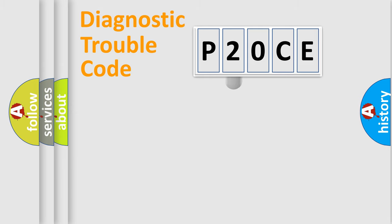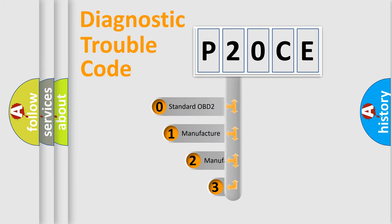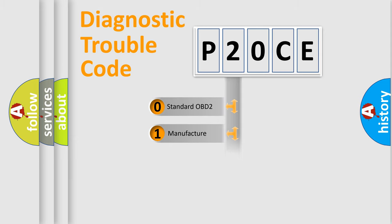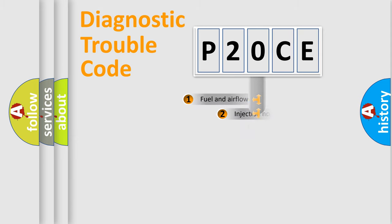This distribution is defined in the first character of the code. If the second character is expressed as zero, it is a standardized error. In the case of numbers 1, 2, or 3, it is a manufacturer-specific expression of a car-specific error.